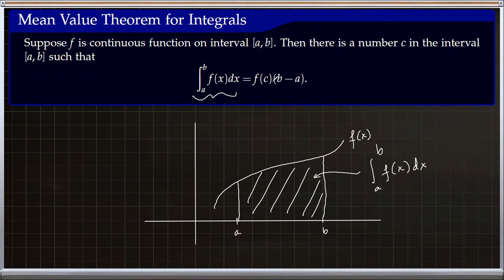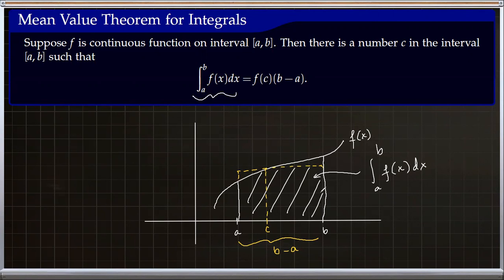What this theorem says is you can find c between a and b such that f(c) times (b minus a) equals that area. If c is somewhere here, then f(c) is this height and (b minus a) is this length, so f(c) times (b minus a) is simply the area of this rectangle. The Mean Value Theorem for integrals says you can find a rectangle whose area equals the area under the curve between a and b.